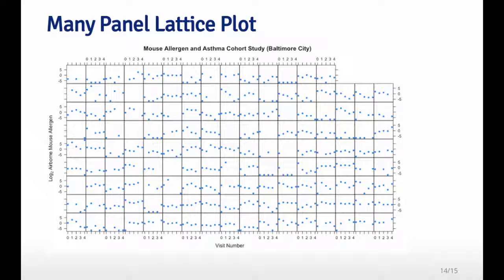You can see the variation across subjects. Some people have just very high levels and some people just have generally lower levels. There's that cross-sectional variation in addition to the within-person variation. You can see that a number of people have missing values. Not everyone has five values. Some people only have two values or one value.